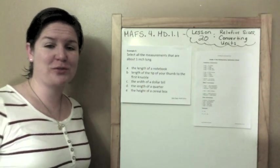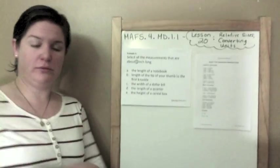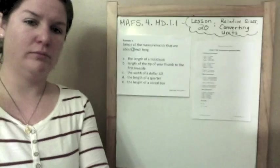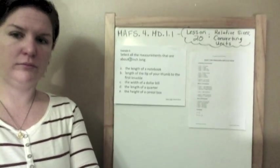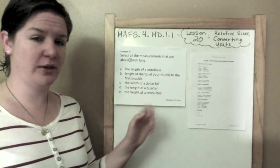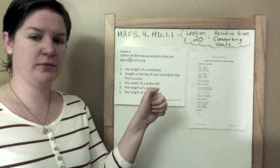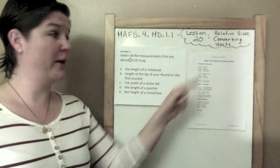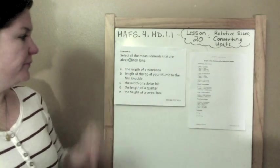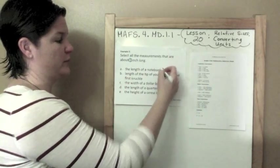Example 5. Select all the measurements that are about 1 inch long. So I'm going to give you a little hint. An inch is about, and this is actually one of the answers, it's about the size of the tip of your thumb to that first knuckle. That's about the size of an inch. So when you're thinking about relative size, it's knowing about this much. Okay? So the length of a notebook. A notebook is like this long. So that's way too long. That's almost like a foot.